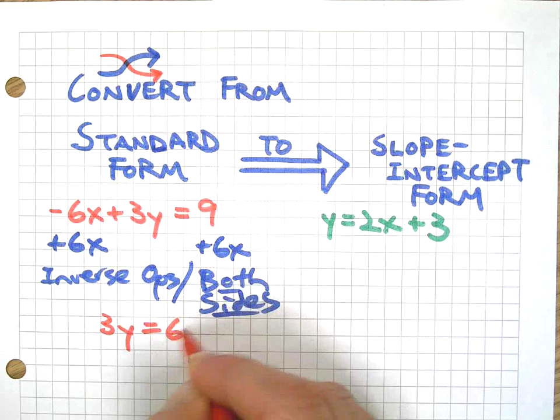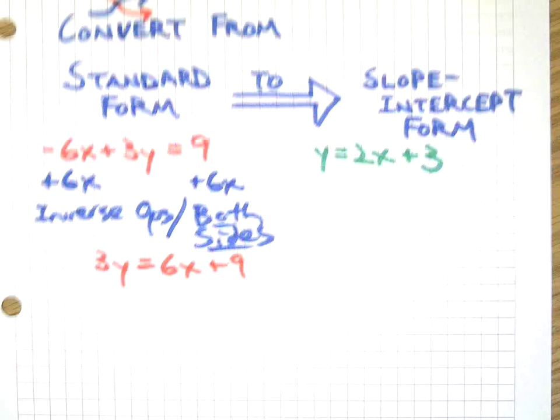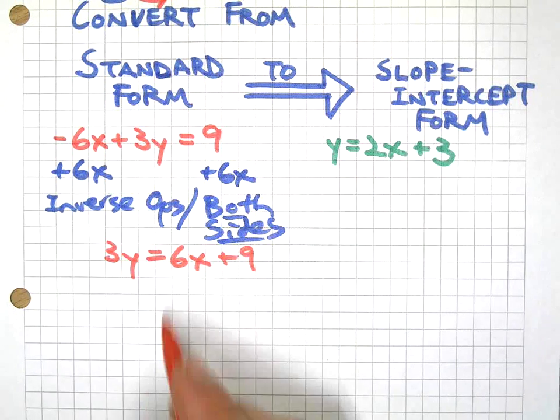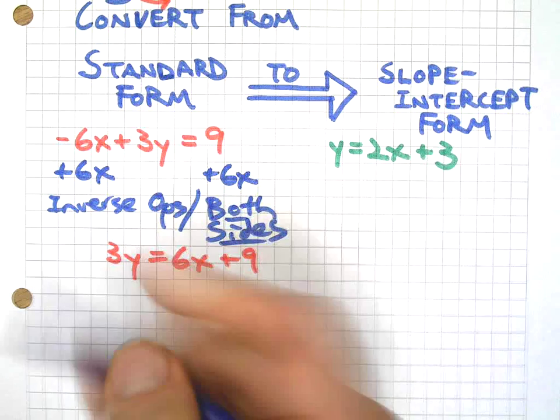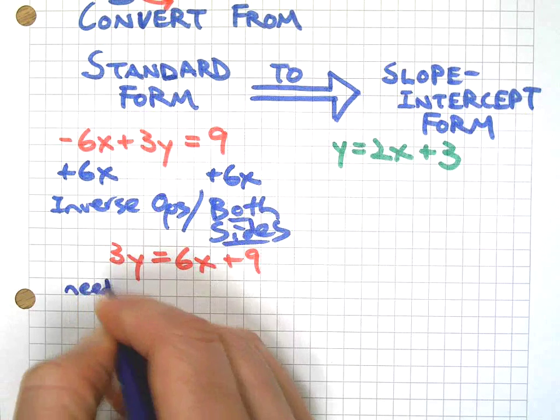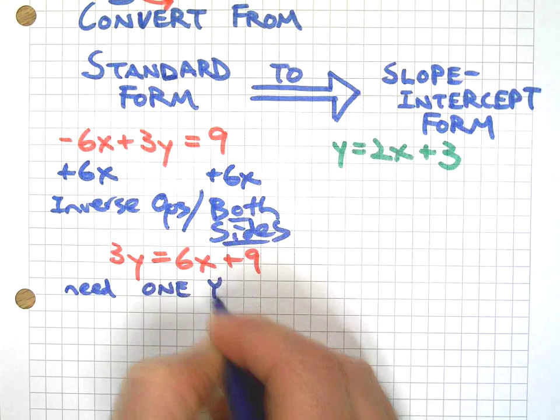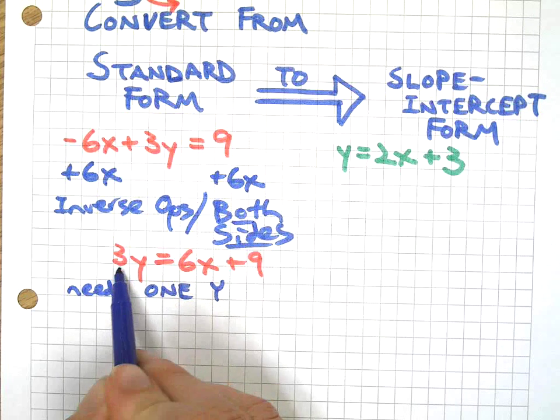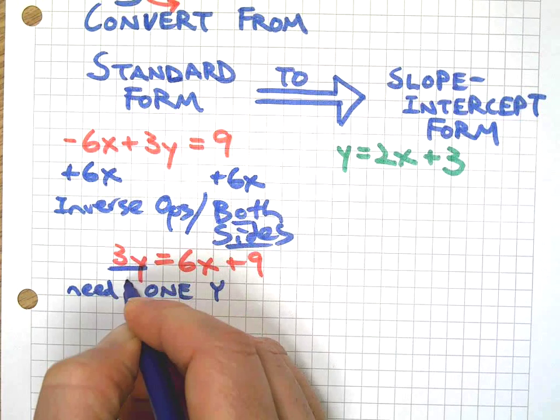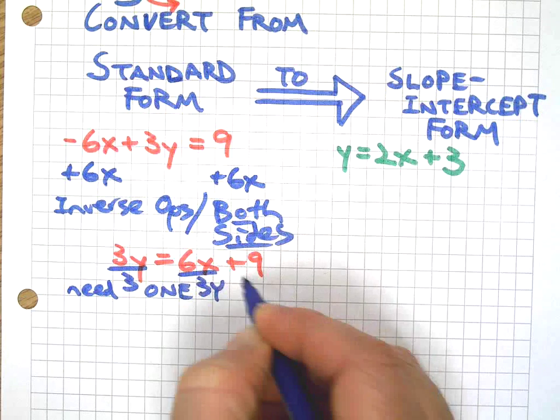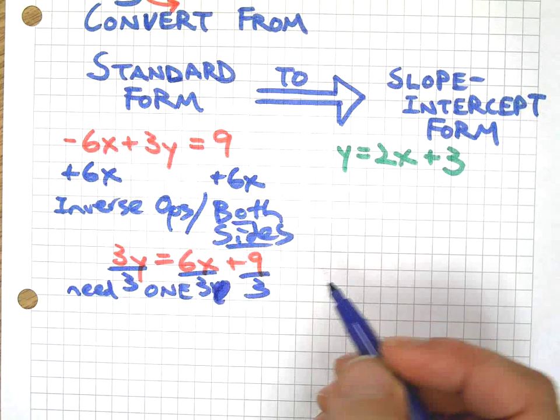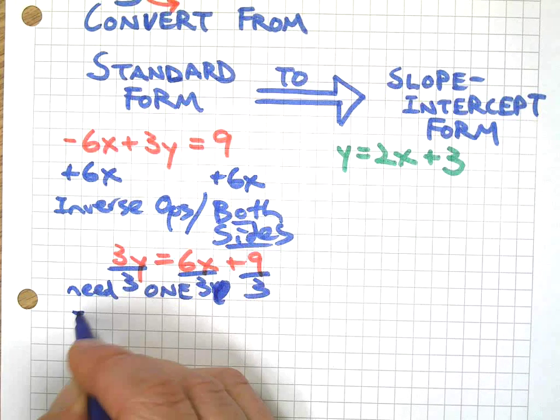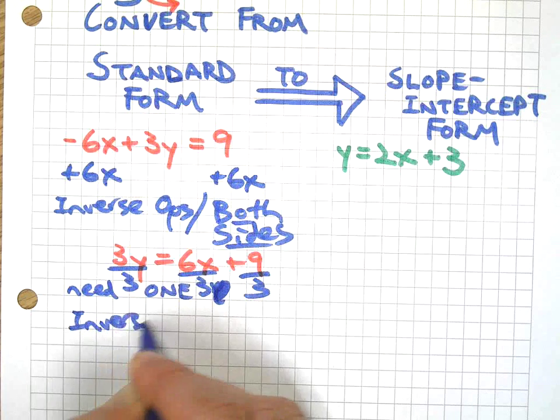But it's also going to change what it looks like. Let's rewrite it. Got 3Y now equals 6X plus 9, and you can see it's starting to look like slope-intercept form, but it's not quite there. We want to have a single Y, need one Y. So in order to do that, since this is multiplication here, 3 times 1Y, inverse ops.